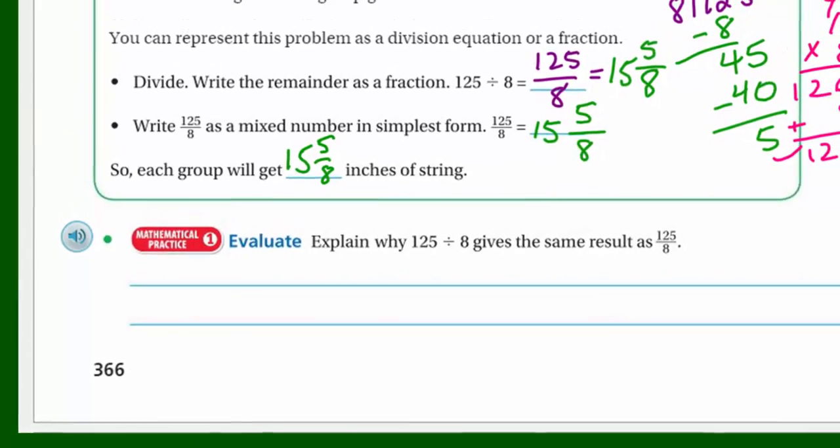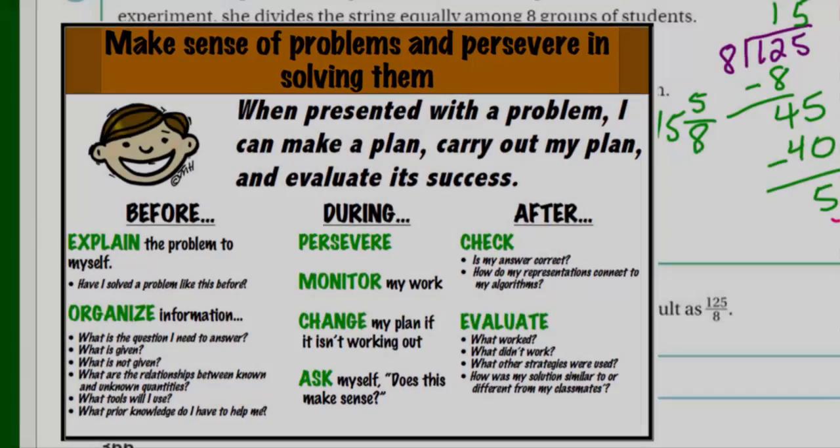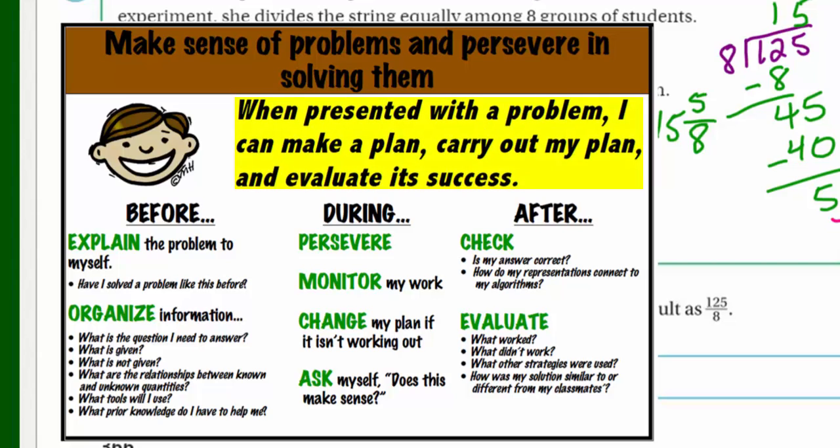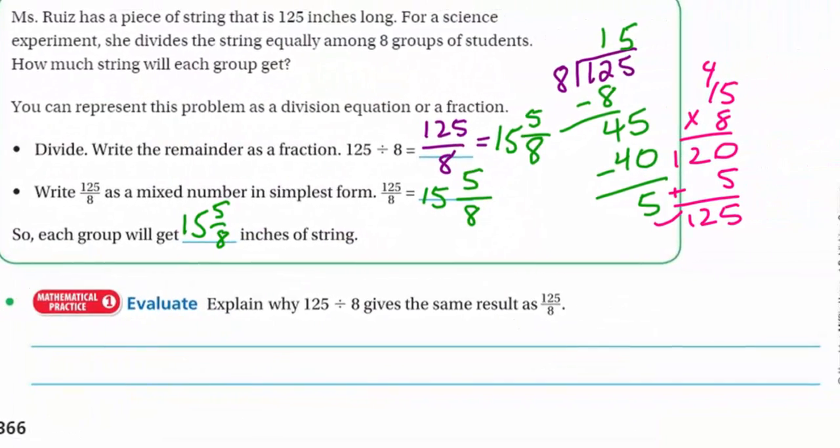We have something else down below here. It says mathematical practice one. Mathematical practice one says, let's make sense of problems and persevere in solving them. When presented with a problem, I can make a plan, carry out my plan, and I can evaluate its success. Before, I need to explain the problem to myself. Have I solved a problem like this before? I like that. Organize my information. What am I being asked to find? What information am I going to use? All that kind of stuff makes a difference. And, of course, during it, you're going to persevere. Monitor my work. Change my plan if I need to. Ask myself, does this make sense? And, of course, after, did my answer, was it correct? Was I able to check my work?